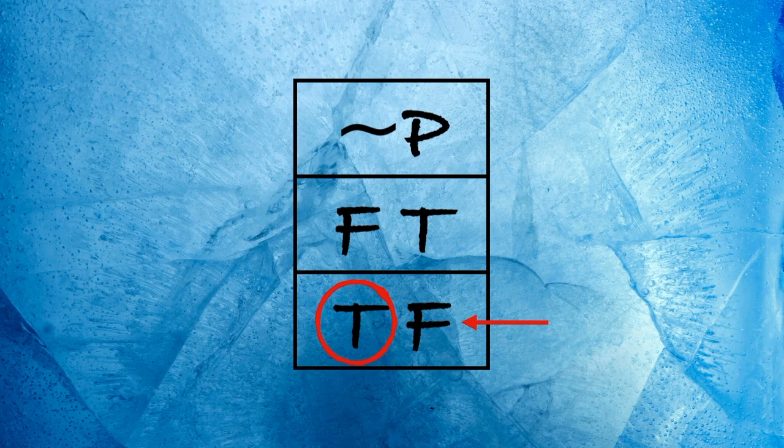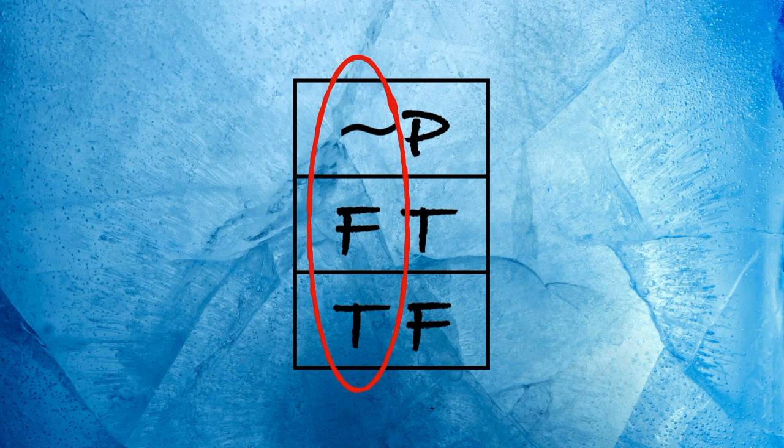Now, this isn't a terribly interesting truth table, but it does do something. It captures the negation function. That is, it illustrates when a negated statement is true. A negation is true when the statement it is negating is false.